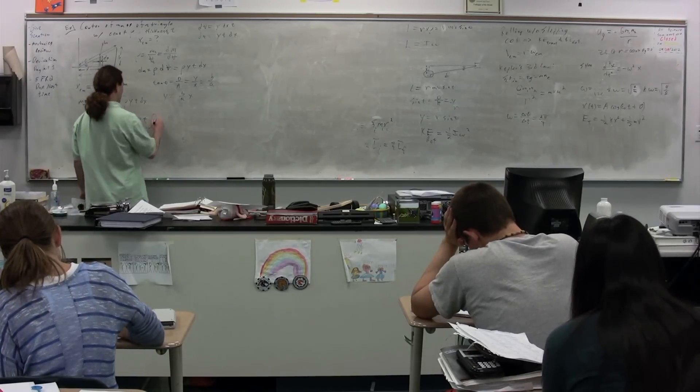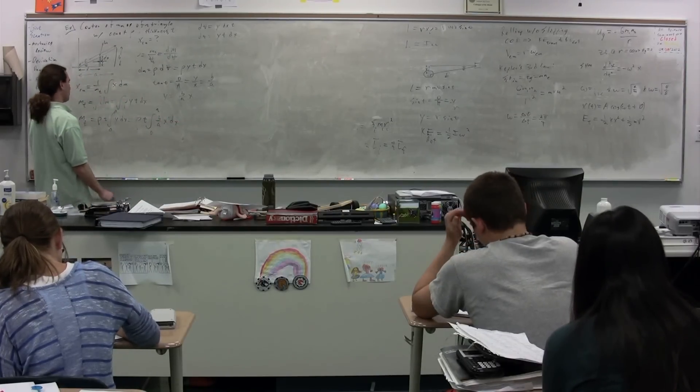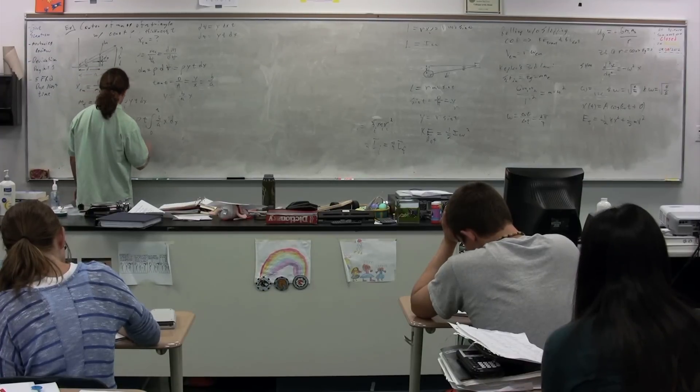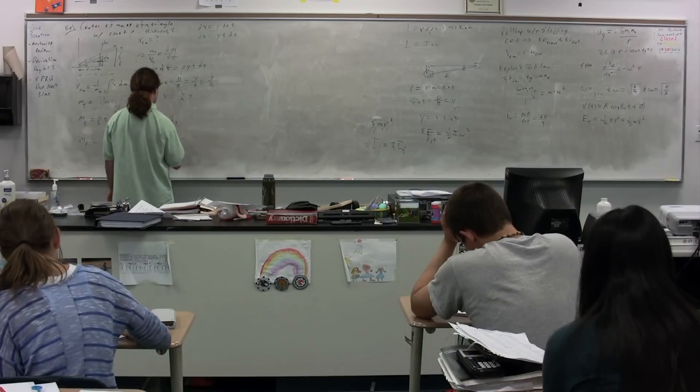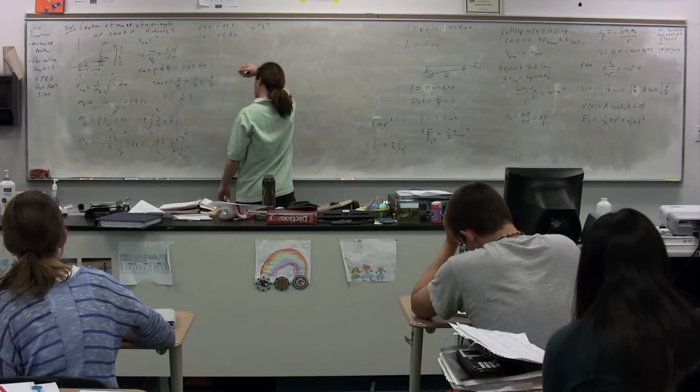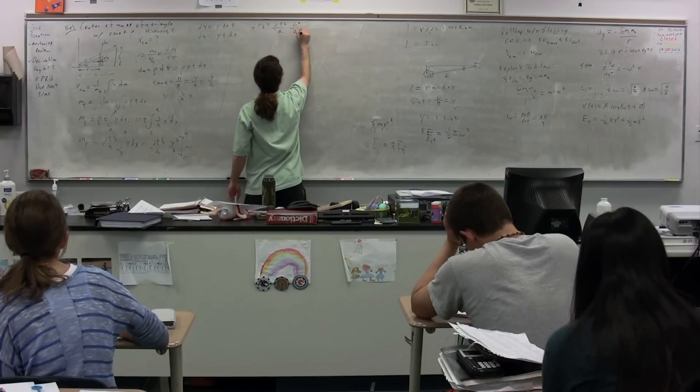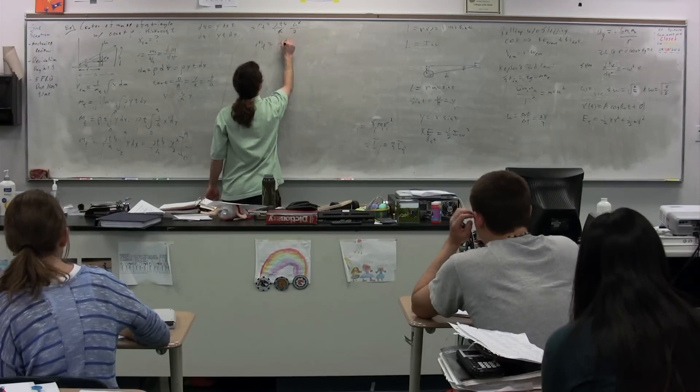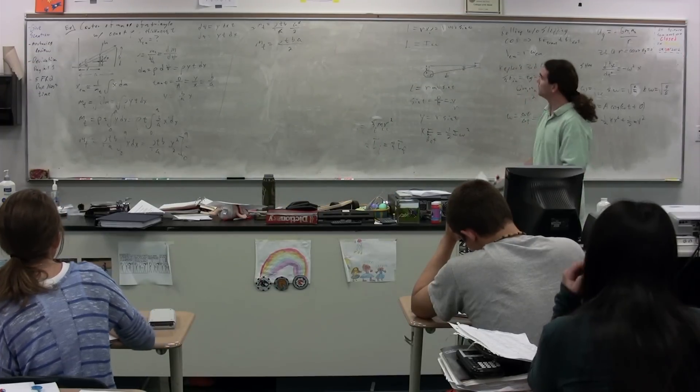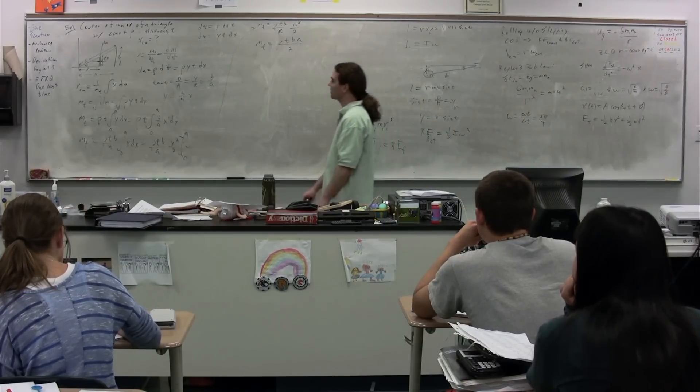We have now the rho times t, integral from zero to a, of b over a times x dx. B over a are both constants. Let me just bring those out. So we have rho t, b over a, integral from zero to a of x dx. So rho t, b over a, integral of x is x squared divided by two. Limits are from zero to a. We have, then, the mass total is equal to rho t, b divided by a times the quantity a squared over two. One of our a's cancels out. The mass total is equal to rho times t times b times a over two. That looks mighty weird. It's not actually. I mean, I guess we'll just leave it. We don't have numbers for b or a, so that's why it looks a little weird.